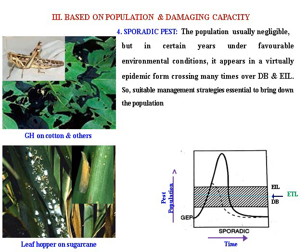Based on population damage capacity, sporadic pest: the population is usually negligible, but for certain years under favorable environmental conditions it appears in a virtually epidemic form, crossing many times over the damage boundary and economic injury level. So a suitable management strategy is essential to bring down the population below the EIL. This is termed as the sporadic pest.